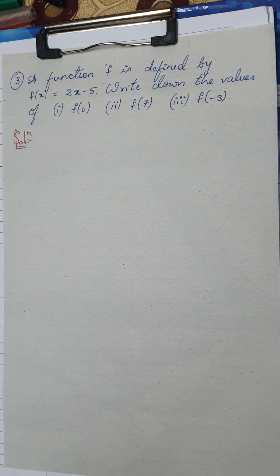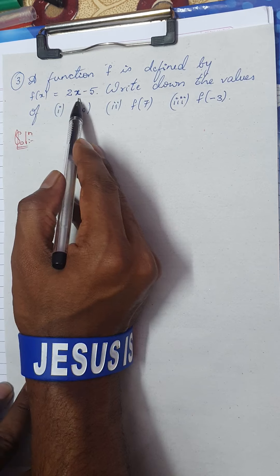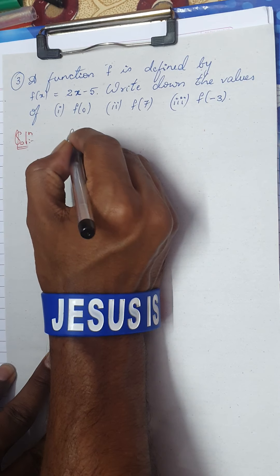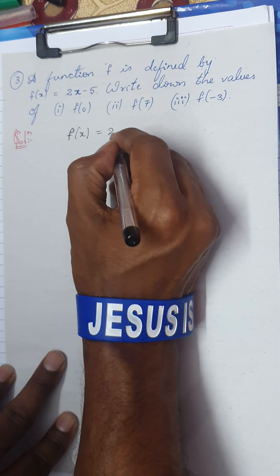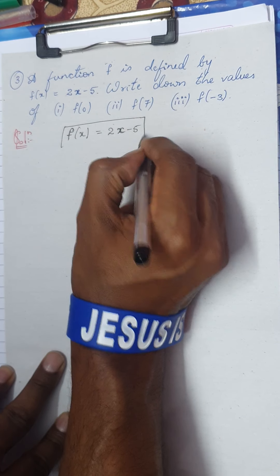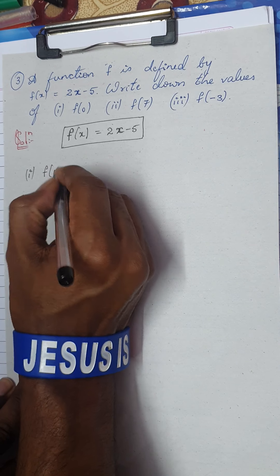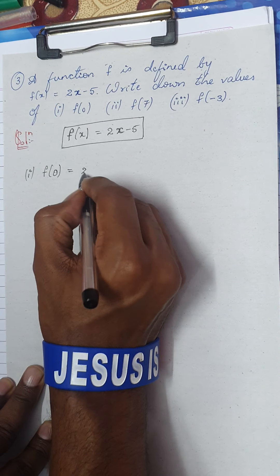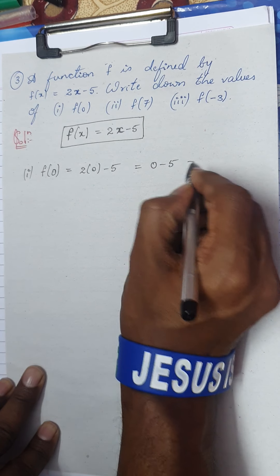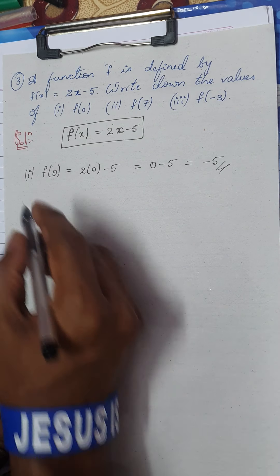Here comes question number 3 - this is actually a very easy question that can be asked for one mark. A function f is defined by f(x) = 2x - 5. Write down the values for three sub-questions. For f(0): substitute 0 wherever you have x - that is 2 into 0 minus 5, which is 0 minus 5, giving minus 5.